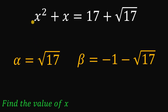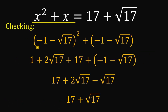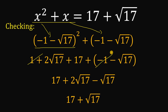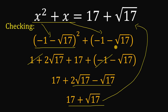We know square root of 17 satisfies x squared plus x equals 17 plus square root of 17. Now let's verify that negative 1 minus square root of 17 also works. Substituting into the equation, we get negative 1 minus square root of 17 all raised to the power of 2, plus negative 1 minus square root of 17. Expanding the squared term gives 1 plus 2 times square root of 17 plus 17. The positive 1 and negative 1 cancel out, leaving 17 plus 2 times square root of 17 minus square root of 17, which simplifies to 17 plus square root of 17. This confirms that negative 1 minus square root of 17 is also a valid solution.